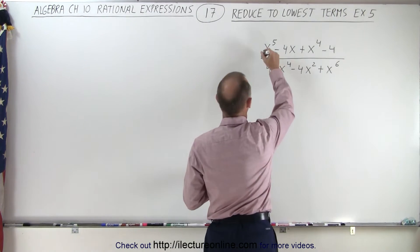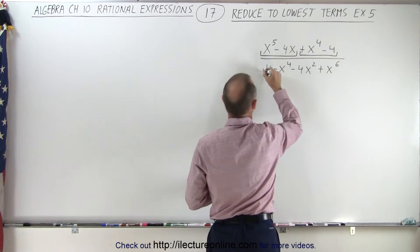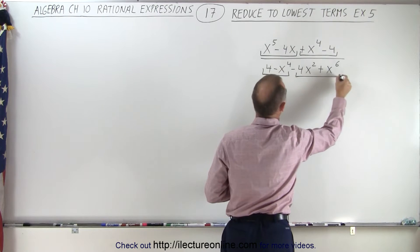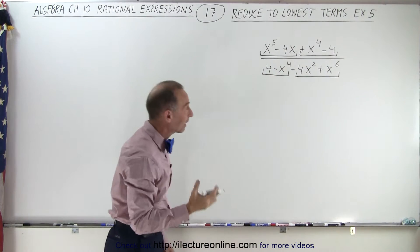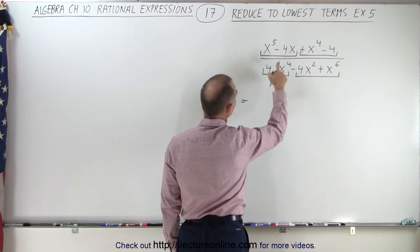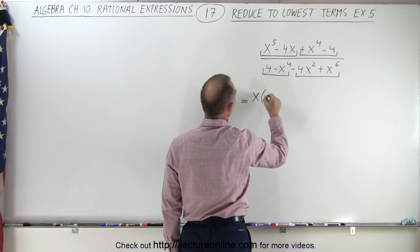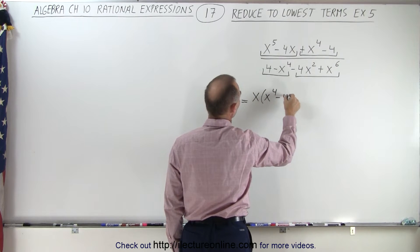So let's group the first two terms and the last two terms together in the numerator and do the same for the denominator. Now what can we factor out that's common in each of those four groups? In the numerator, we can factor out an x. That leaves us with x to the fourth minus four.